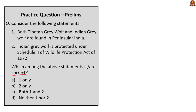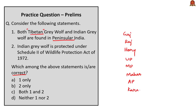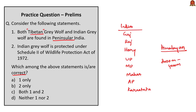Two statements are given. The first statement: both Tibetan gray wolf and Indian gray wolf are found in peninsular India. This can be logically eliminated — the Tibetan gray wolf obviously cannot be found in peninsular India. Indian gray wolf can be found in about eight states: Gujarat, Rajasthan, Haryana, Uttar Pradesh, Madhya Pradesh, Maharashtra, Andhra Pradesh, and Karnataka. Tibetan gray wolf is found in the Himalayan landscape at elevations of 3,000 to 4,000 meters — hence it is also called the Himalayan gray wolf.